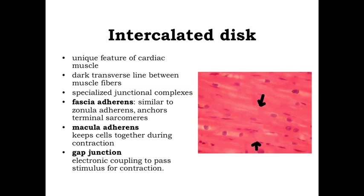Also within the intercalated discs are gap junctions — small ion channels between adjacent cells that allow for electrical coupling of these muscle cells. Ions flow very rapidly from the cytoplasm of one cardiac muscle cell to the next, allowing for the stimulus signal and synchronous contraction to occur. You're going to be able to see the transverse lines in a good longitudinal section, but you won't be able to identify the fascia adherens, macula adherens, or gap junctions without an electron micrograph.